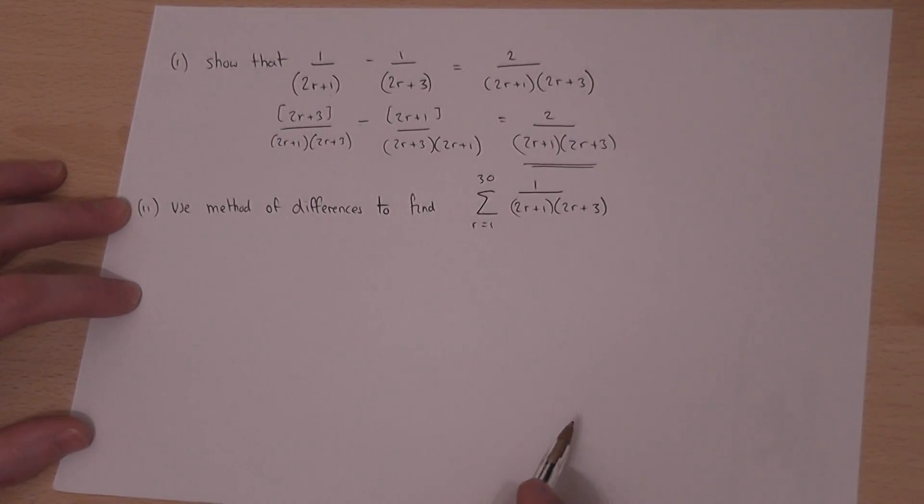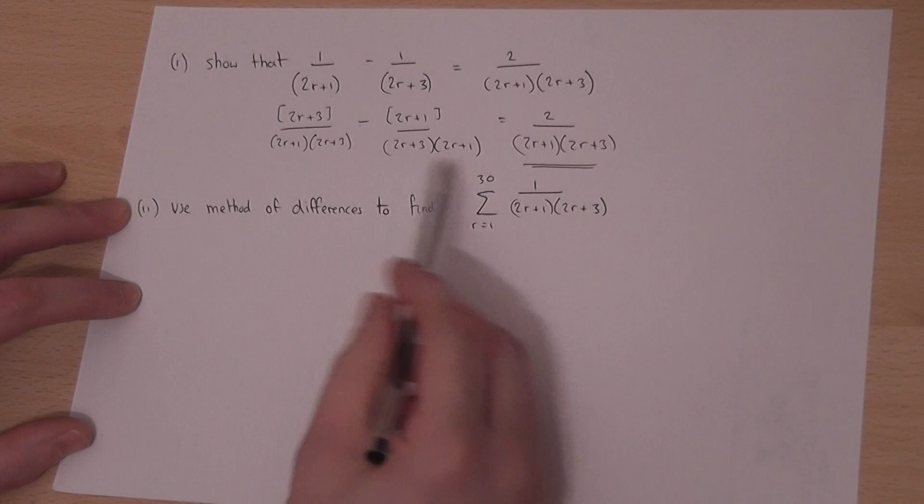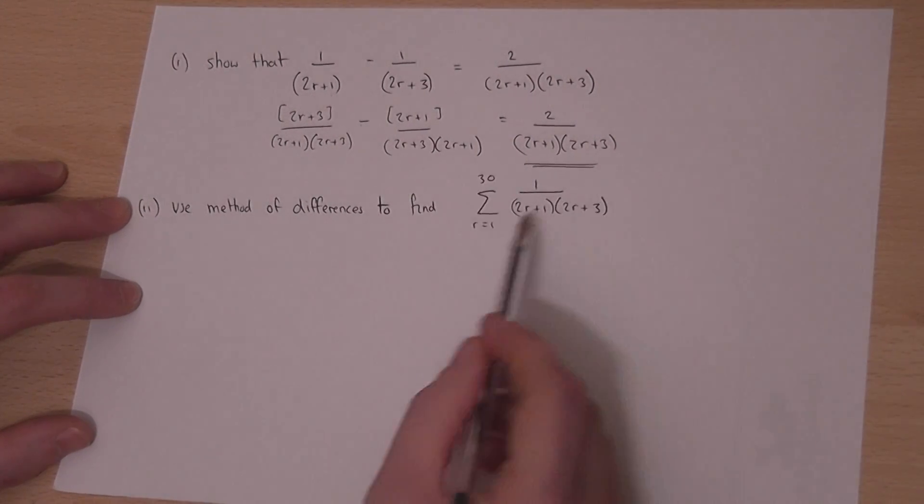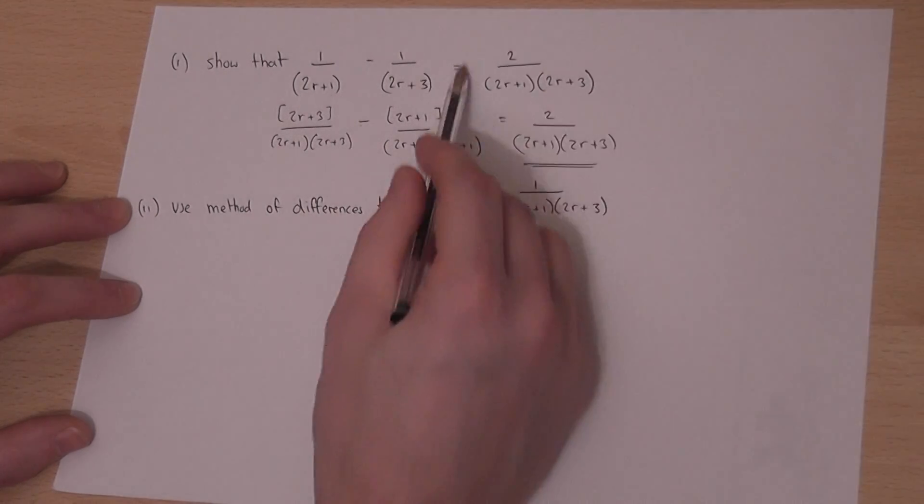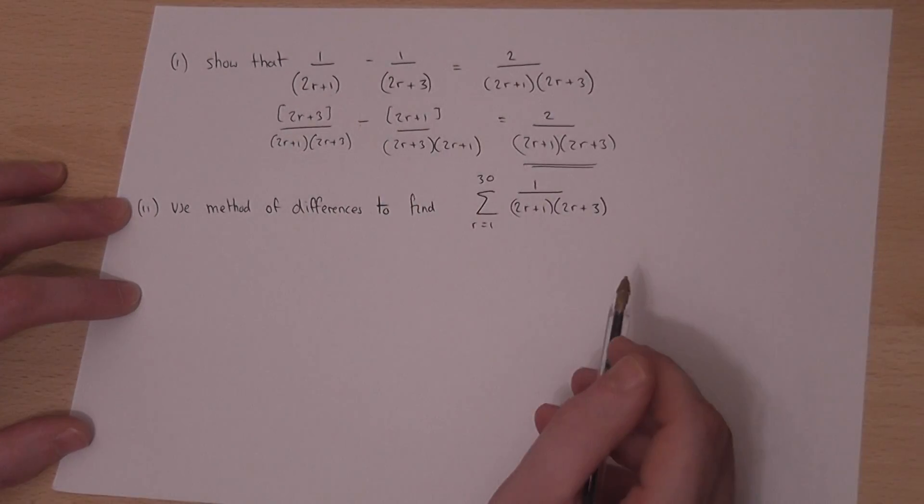Now this technique in reverse allows us to find what appears quite a complex summation. Now if I compare this to this it differs just by a factor of 2.